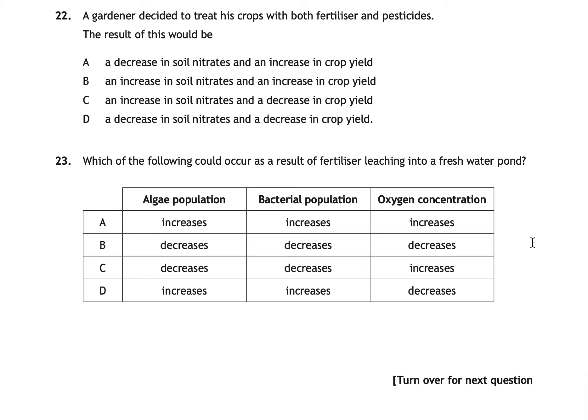Question twenty-two says a gardener treats crops with both fertiliser and pesticides, and asks what the result would be regarding nitrates and crop yield. The correct answer is B: there would be an increase in soil nitrates, because fertiliser adds nitrates, and an increase in crop yield, because pesticides kill the pests eating the crops.